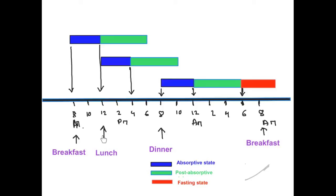When you take lunch you are just beginning to enter post-absorptive state, and you break it by eating, immediately re-entering absorptive state for the next four hours — from 12 noon through 2 p.m. up to 4 p.m. After 4 p.m., you enter post-absorptive state again for the next six hours. A snack around 4–5 p.m. may transiently bring you back into absorptive state.